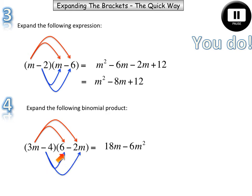Negative 4 times 6. Negative 24. Negative 4 times negative 2m is a positive 8m.